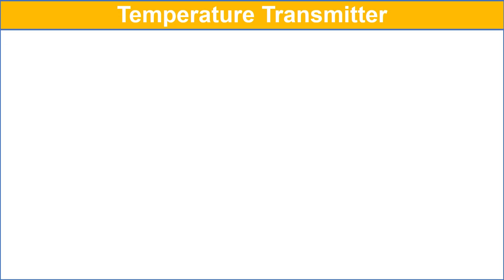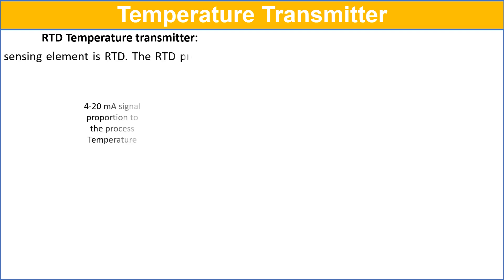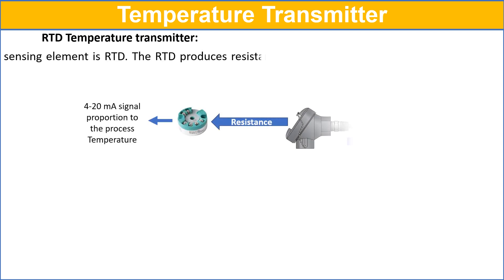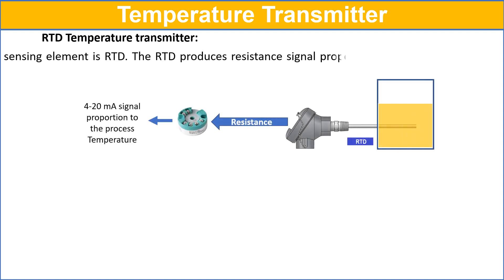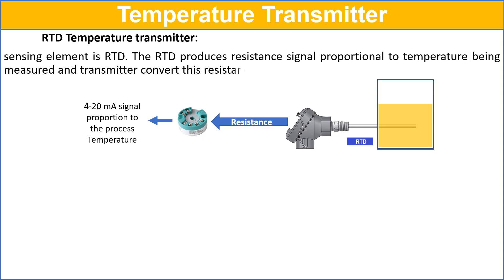In the RTD temperature transmitter, the sensing element is an RTD. The RTD produces a resistance signal proportional to the temperature being measured, and the transmitter converts this resistance signal to the standard instrumentation signal like 4 to 20 mA.